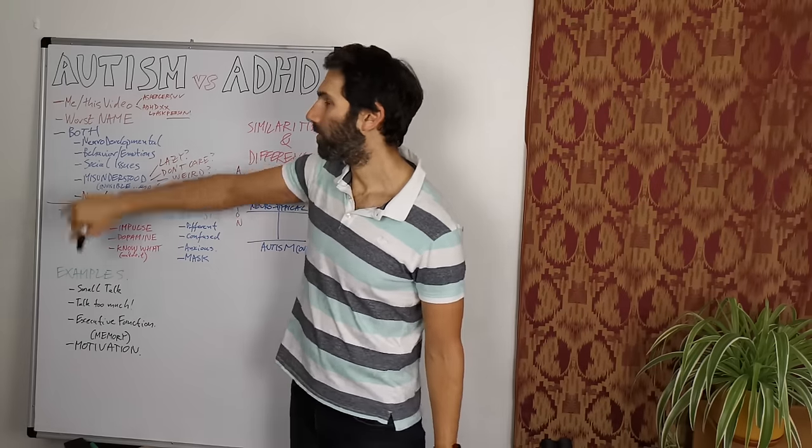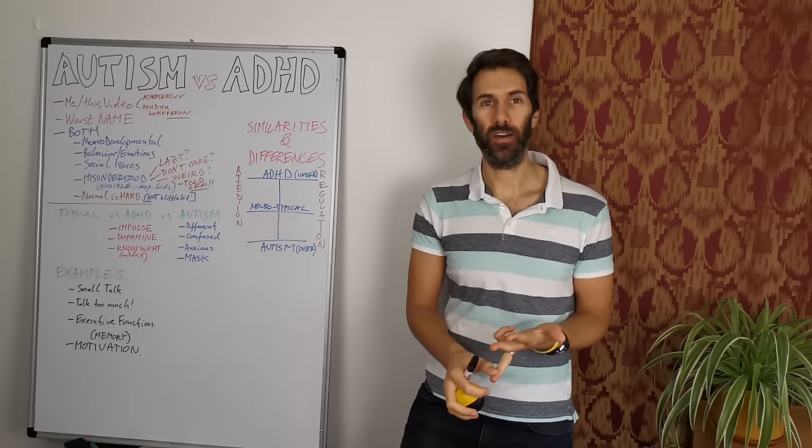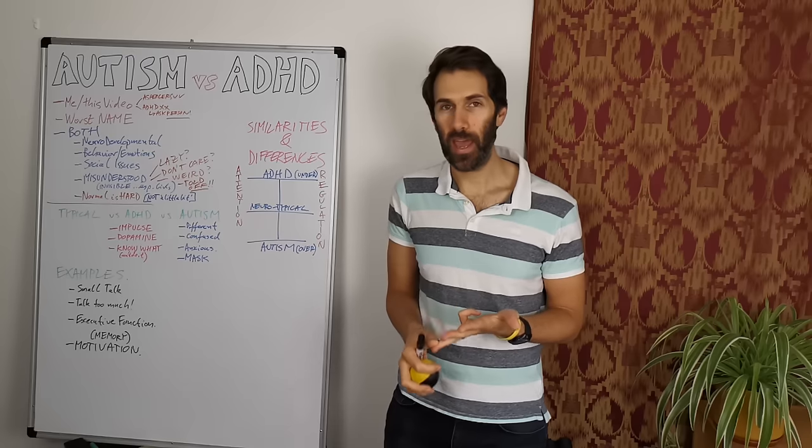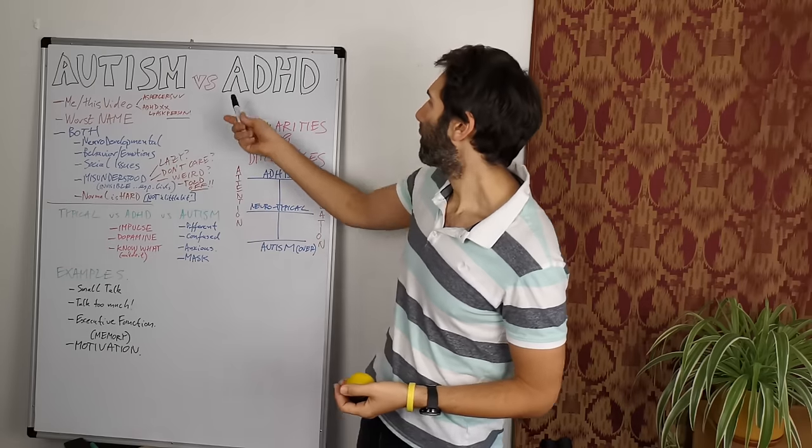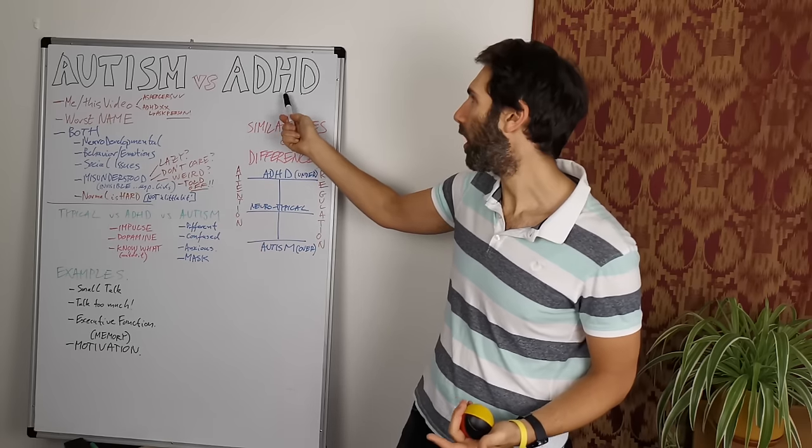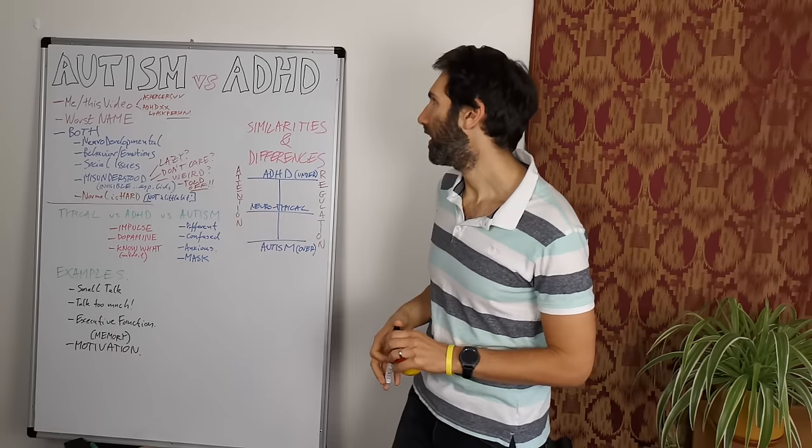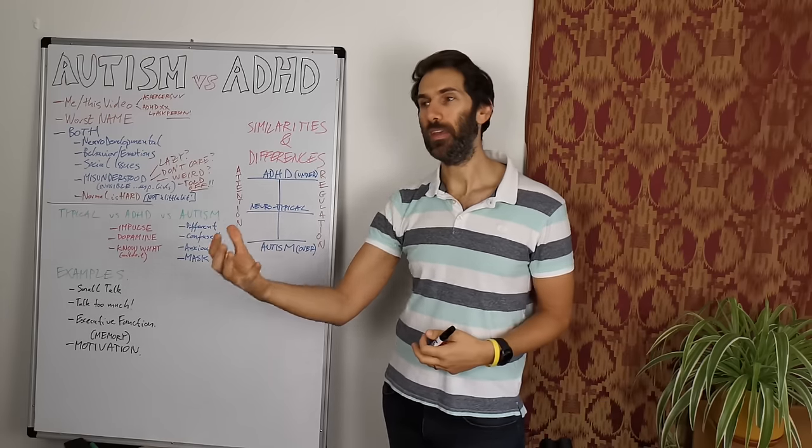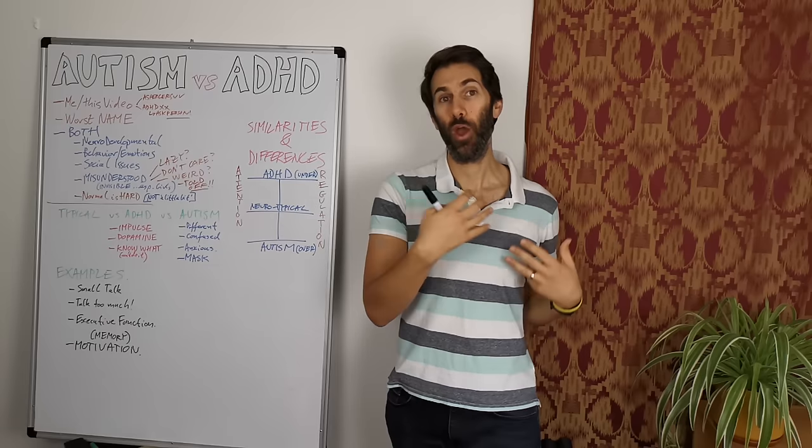So the first thing to note is that the name ADHD, attention deficit hyperactivity disorder, is probably the worst named thing in the entire medical profession. Attention, great. Yes, it has something to do with attention. Deficit. Yeah, no, not always. Hyperactive. No, not always. Disorder. Arguable. Right? So the best way to understand ADHD is it's around attention, has very specifically to do with attention and regulation. Whereas understanding autism, it's a difference that can be in many, many, many different areas. Attention being one of those areas.